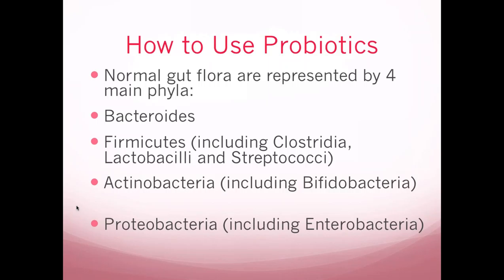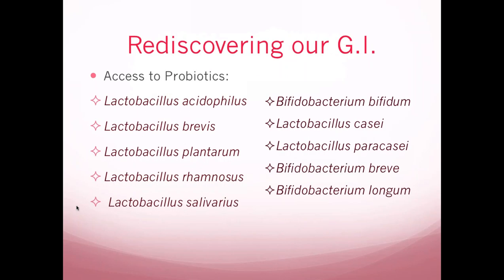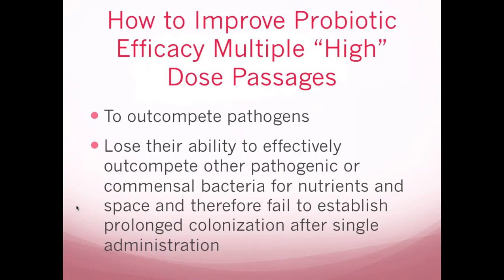Organic food, ferments, kefirs, and so on can help increase your chances of microbiome diversity — I highly encourage that. Prebiotics are what feed probiotics, and they're also going to be critical. Here's a list of some of the more common commercially available probiotics — they fall under the Firmicutes, mostly bifidobacterium-type species, living in various parts of your GI tract.